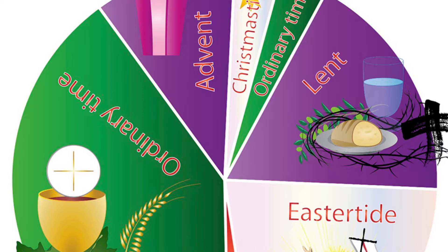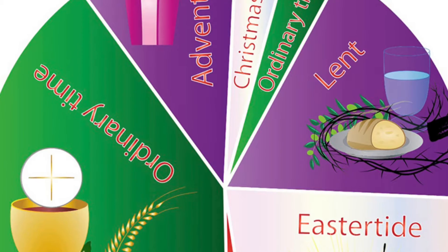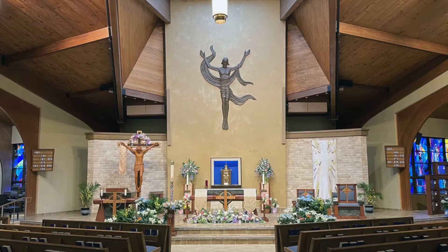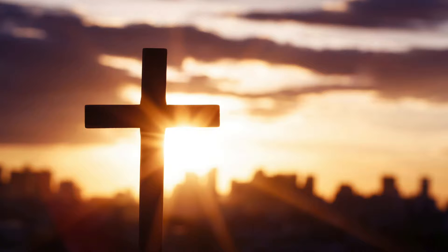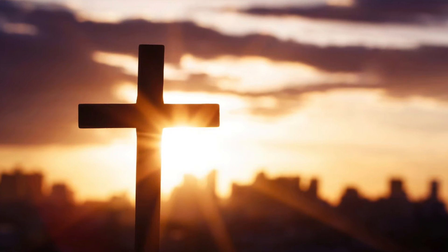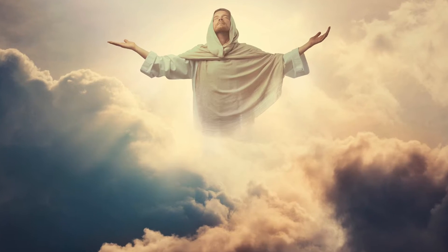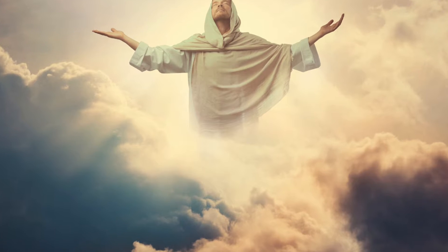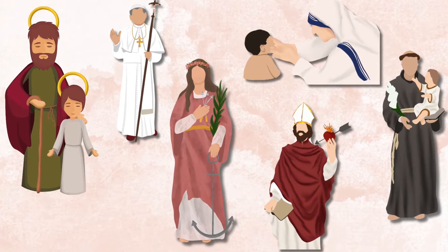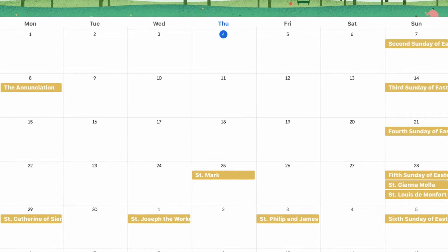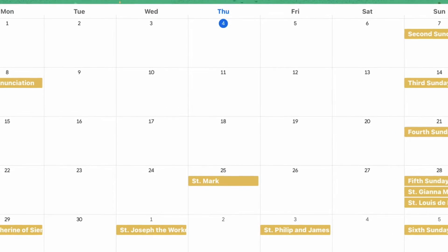The Catholic Liturgical Calendar is a schedule of seasons, feasts, and celebrations observed by the Catholic Church throughout the year. It organizes the Church's worship and helps Catholics commemorate key events in the life of Jesus as well as the lives of the saints. If you'd like to add the Catholic Liturgical Calendar to your Google Calendar, then this is the video for you. This is Jackie with Plan a Healthy Life, and let's get started.